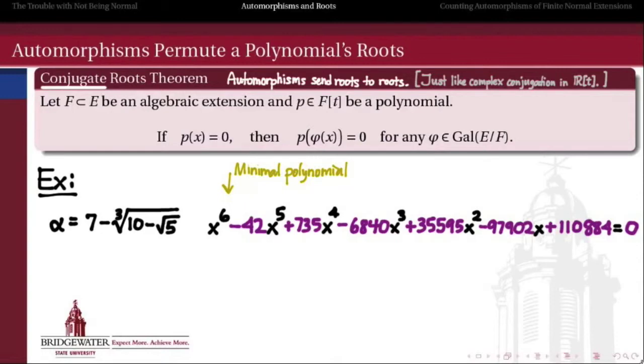Now my question is, what other roots will this polynomial have? And we might just take the guess that if I take alpha and I just rewrite it and flip one of those signs from a minus to a plus, for example, if I switch the square root of 5 from being subtracted from 10 to being added to 10, I might ask the question, is beta also a root of this minimal polynomial?